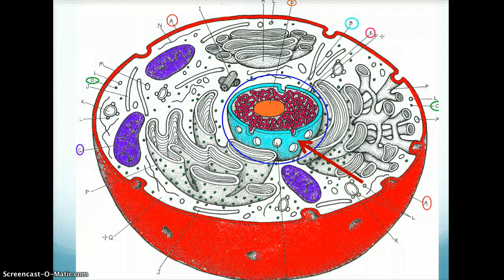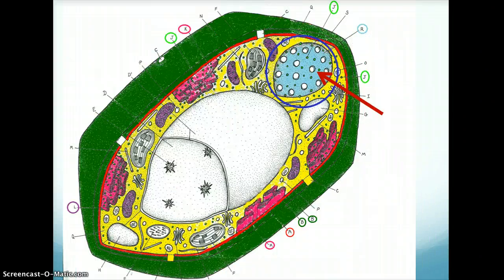In this animal cell, the nuclear envelope is teal and the ribosomes are green dots. In this plant cell, the nuclear envelope is also teal, and the ribosomes are the light green dots.